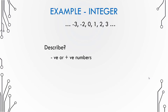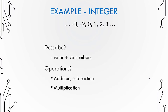How would you describe an integer? Well, an integer can be negative or positive. And what operations can be performed on an integer? You can perform addition and subtraction, multiplication as well as division. Abstract data types can also specify constraints on operations — in this case, the constraint is that you cannot divide an integer by zero.